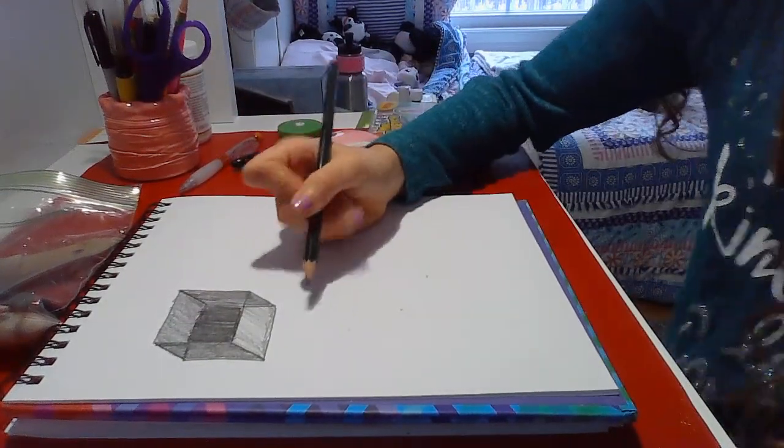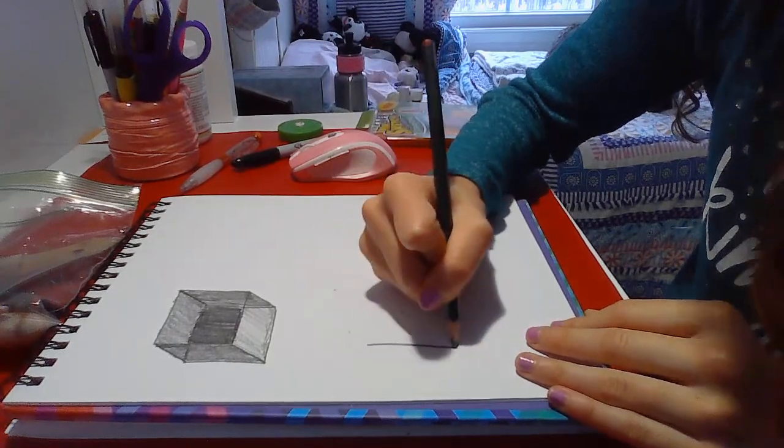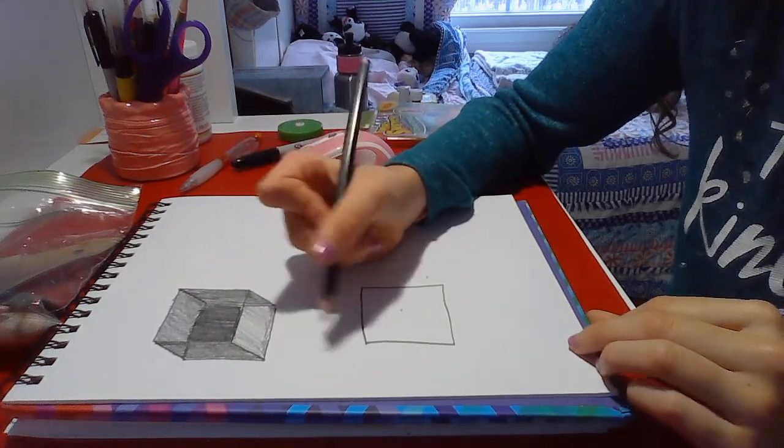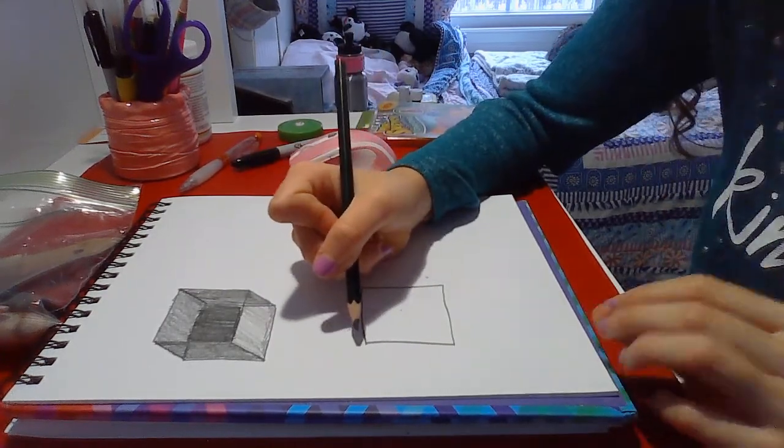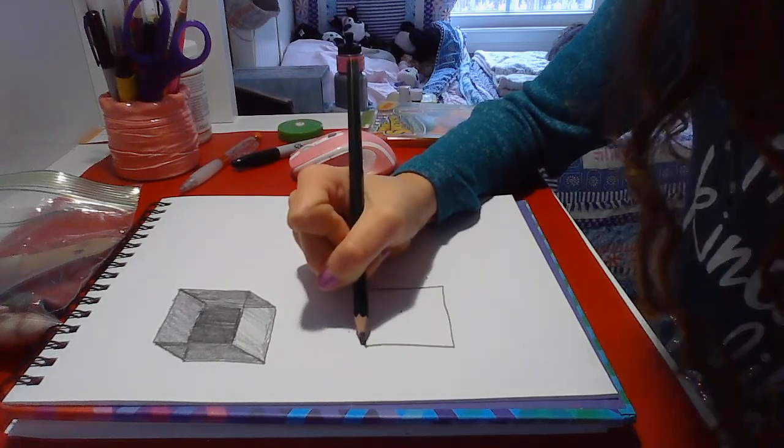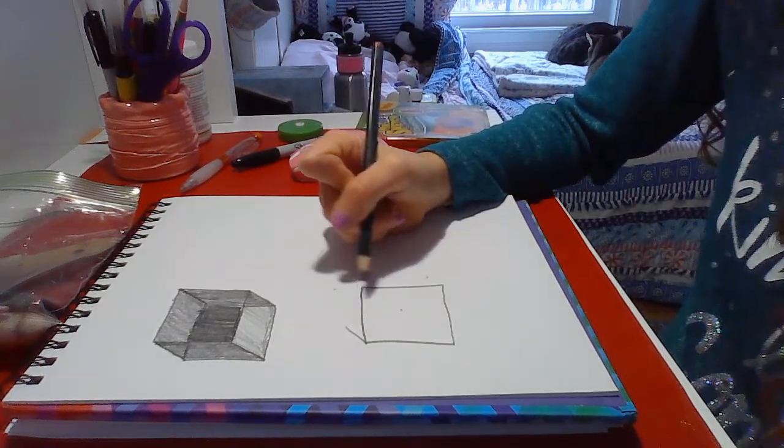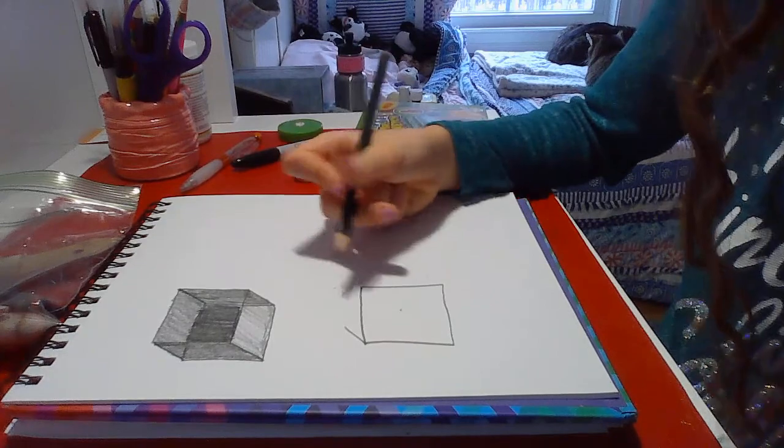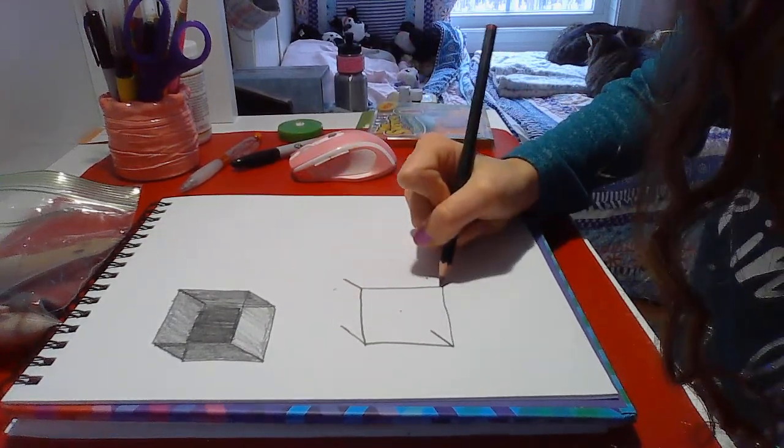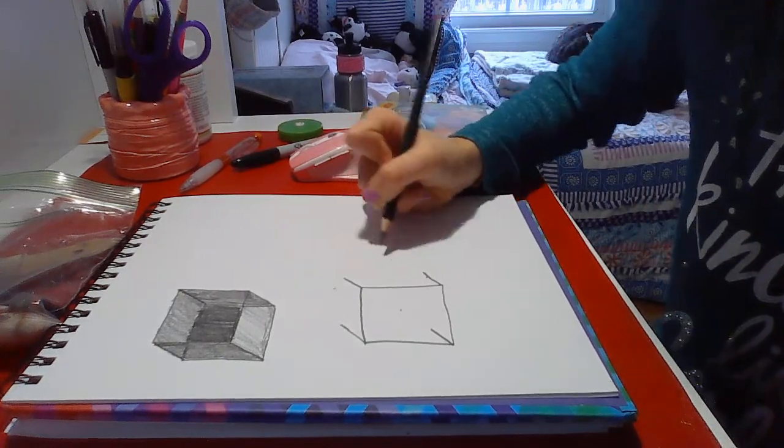And now I will be showing you the second way to draw a cube. You start with a square and starting at the top left corner, I'm going to draw a line that slants right. So you're going to draw a line from all the corners that slants right. So they're all slanting in this direction.